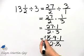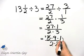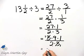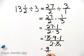So what do I have left? I have one times nine times one, which is nine, over two times one, which is two.